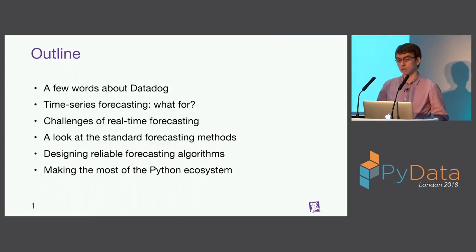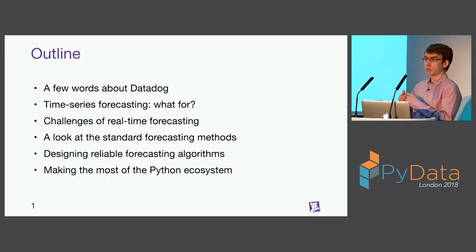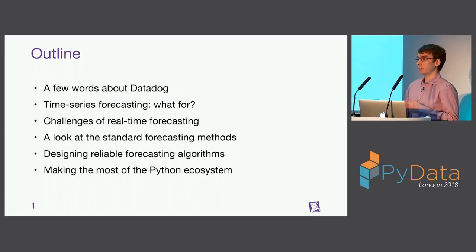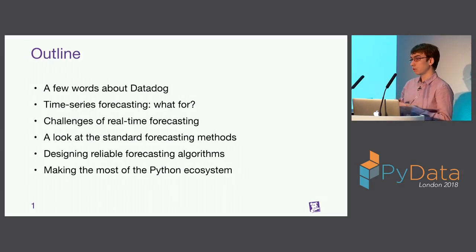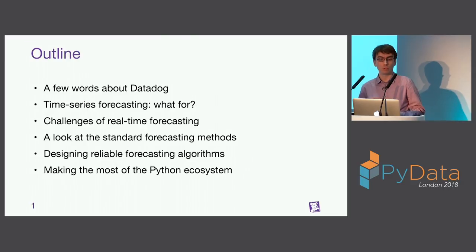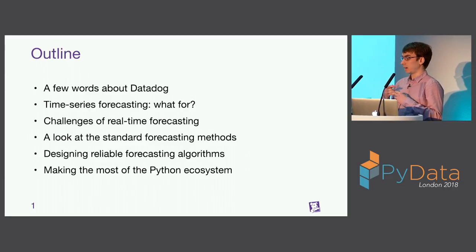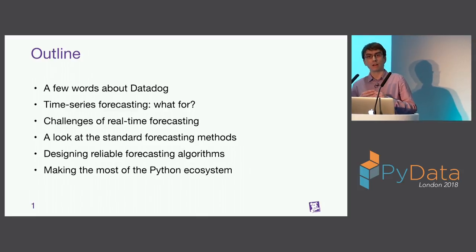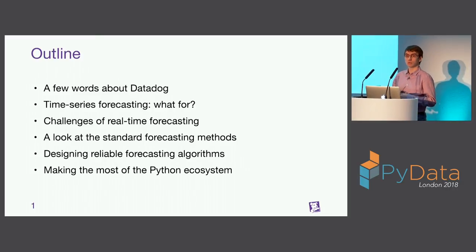I'll start by saying a few words about Datadog to give you some context, and then I'll go through the whole process of designing a forecasting algorithm, starting with identifying the use cases we're focusing on, the problems we're trying to solve, identifying the challenges we have to tackle, looking at the literature and freely available software. We'll see how we design an algorithm that forecasts time series, and finally I'll explain how we productionized the algorithm and made the most of the Python ecosystem to optimize it and make it reliable and fast in production.